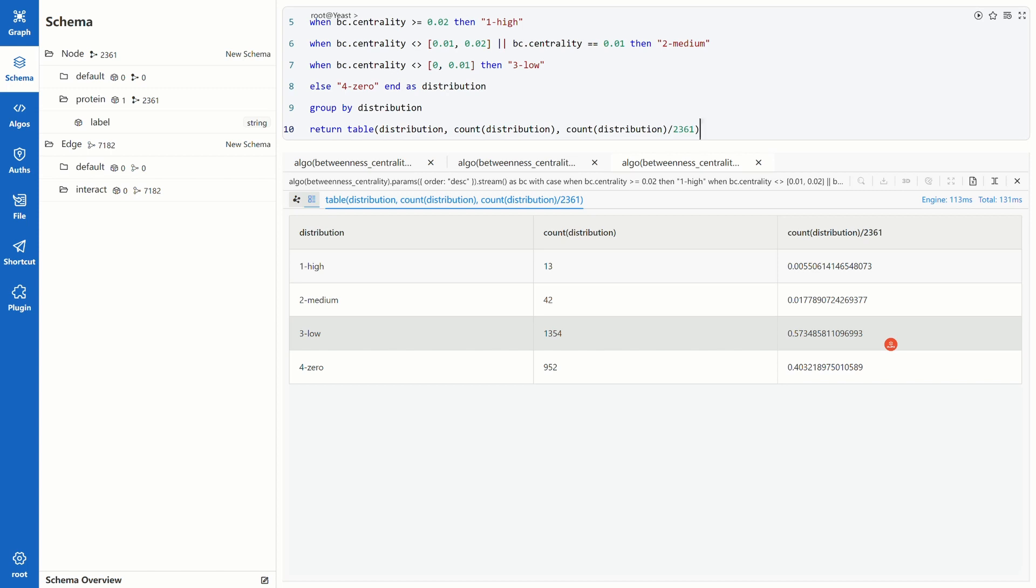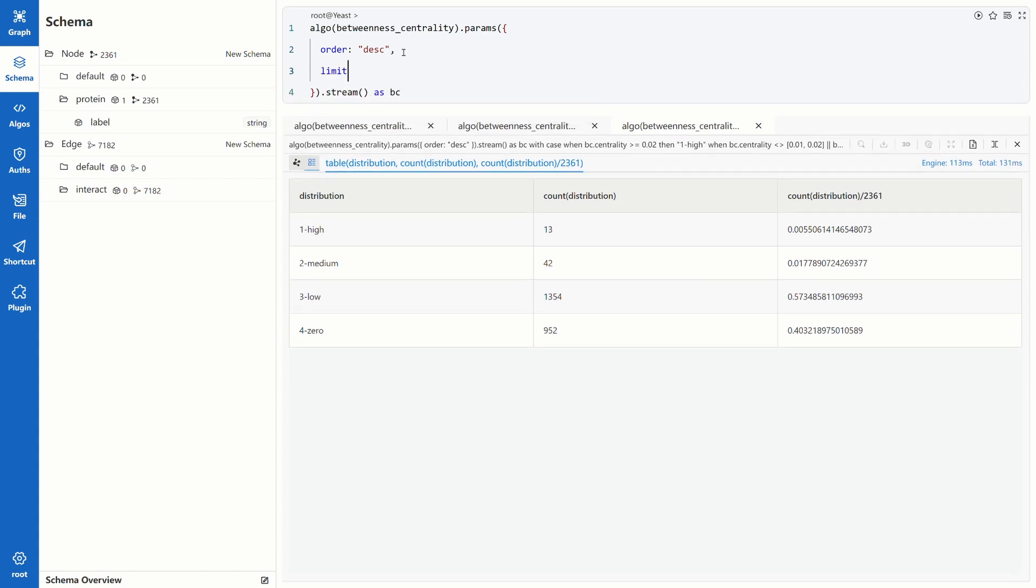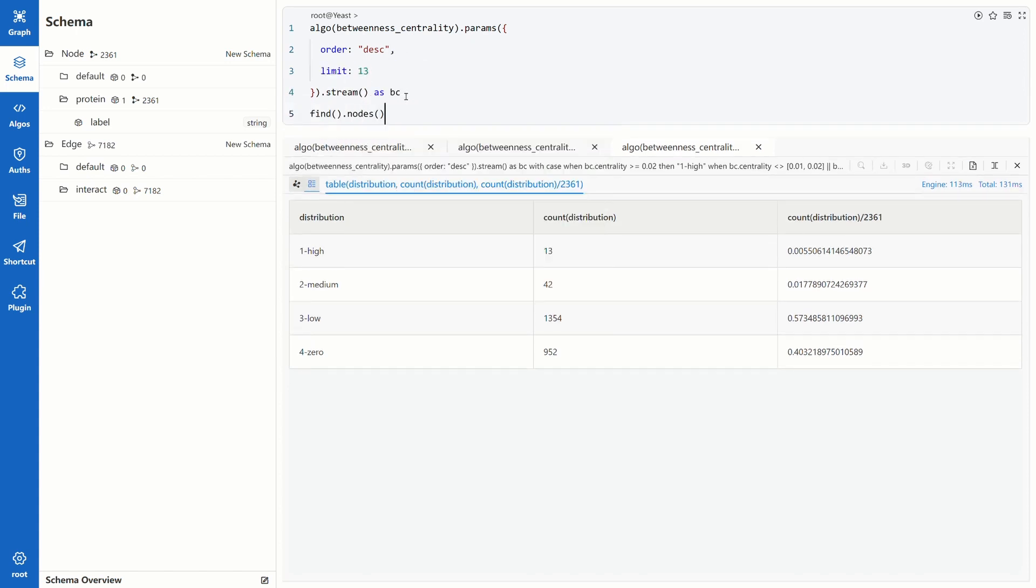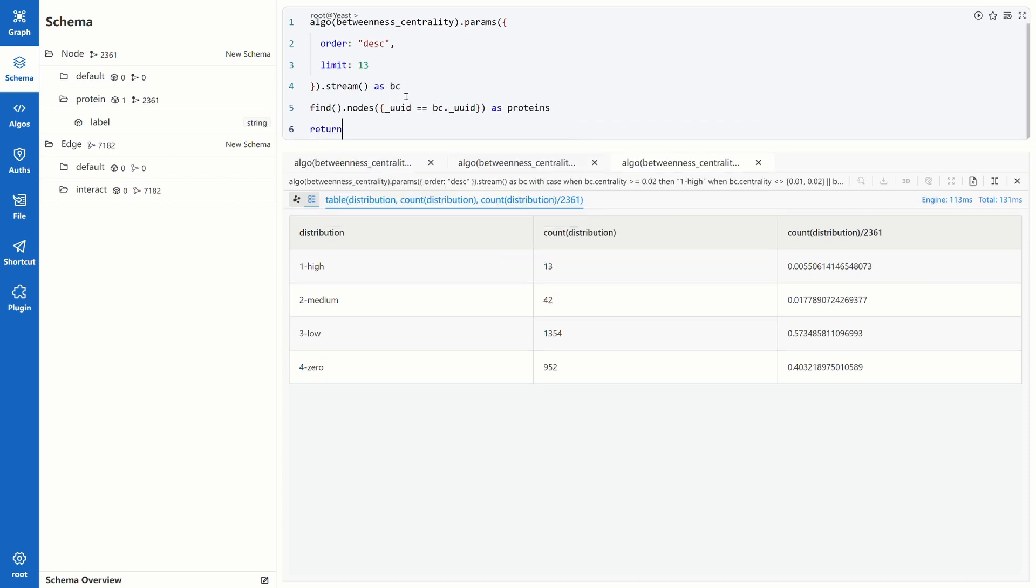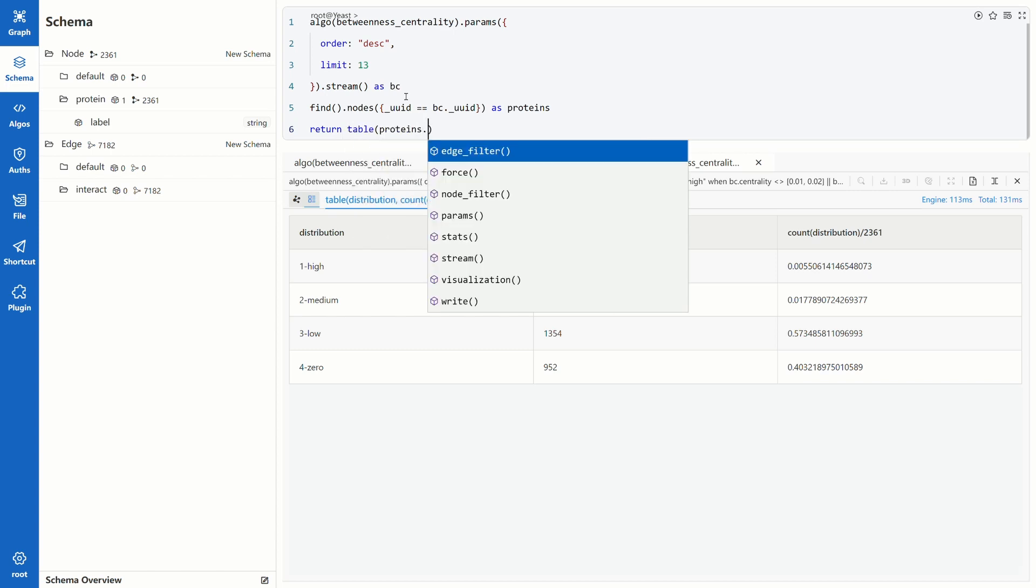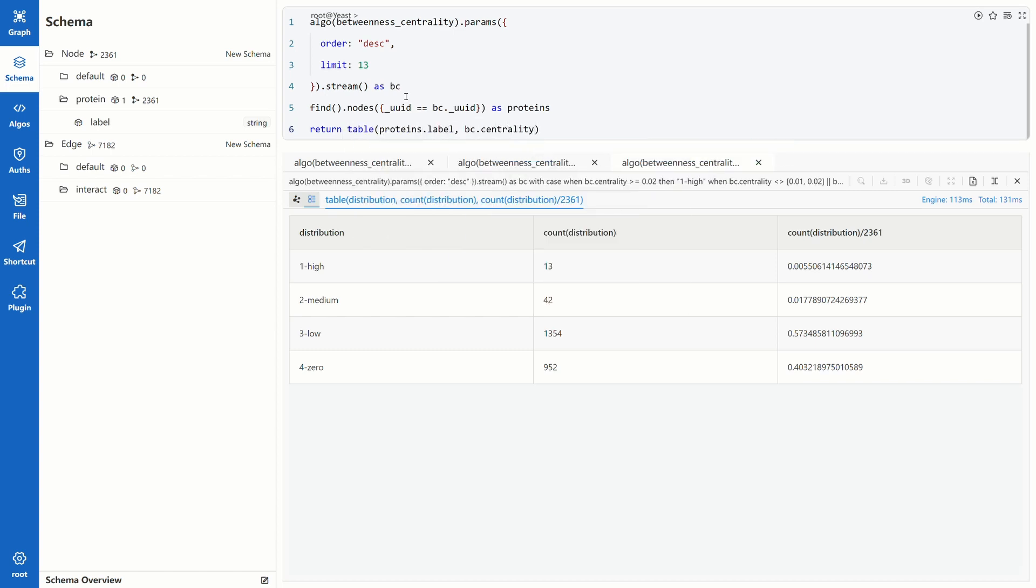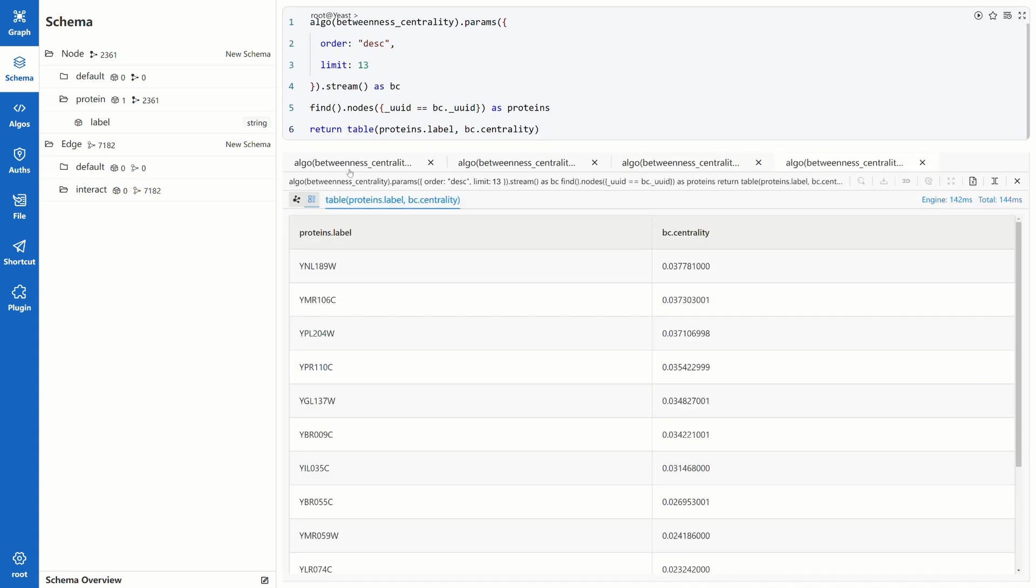So now we have a clue of how many essential proteins we want to further study. Maybe these 13 proteins with the highest scores. Remove all these lines and add limit 13 in the parameter. Find nodes by the UUIDs of these 13 proteins and define the results as proteins. In the return table, put the label of protein in the first column and then centrality score. Run it to get the results. Those labels may not explain much to non-experts, but these labels are actually real and you could further study certain proteins by looking into some biological databases.